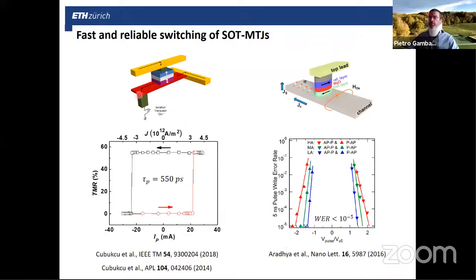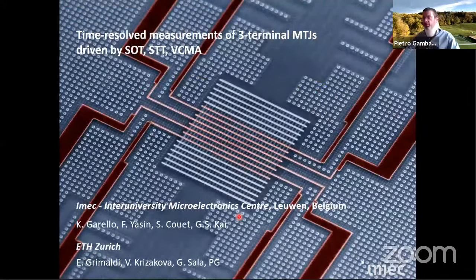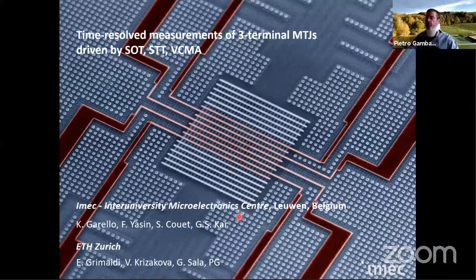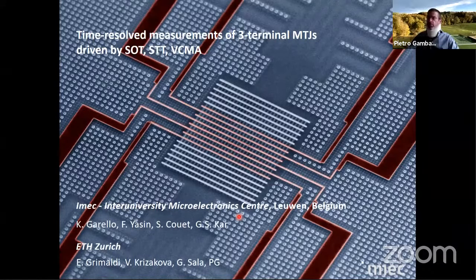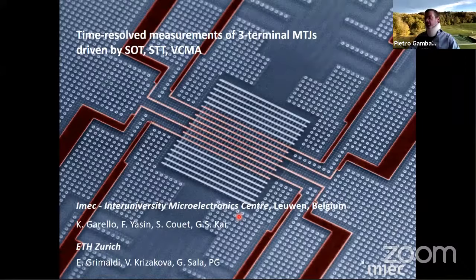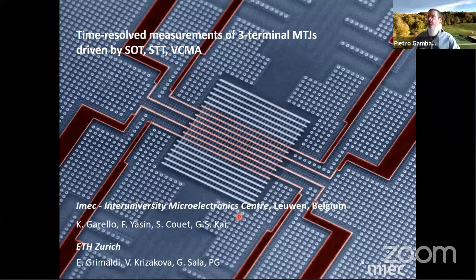So in theory, spin-orbit torque switching should be faster than spin transfer torque switching. Indeed, experiments done so far—these are experiments where the magnetic tunnel junction is pulsed, one pulses the bottom electrode and then measures the TMR after the pulse—reveal reliable switching even using current pulses that are half a nanosecond long. Also, this type of device presents very low write error rates that make it possible to really reduce the pulse length to the order of the nanosecond. However, none of the measurements presented so far has been performed in the time domain, and so the dynamics of the switching remains a little bit concealed so far.